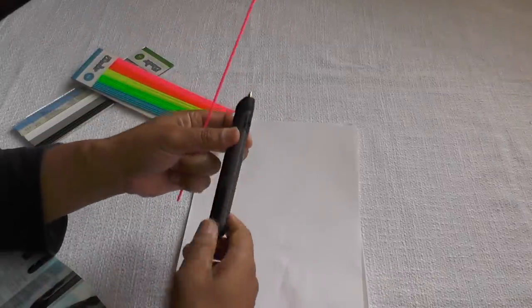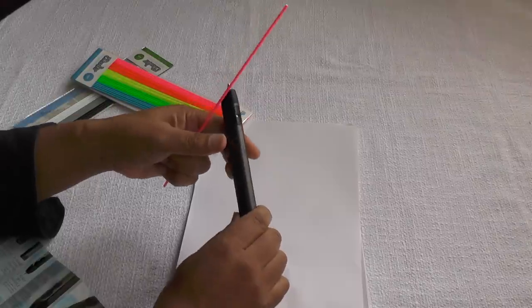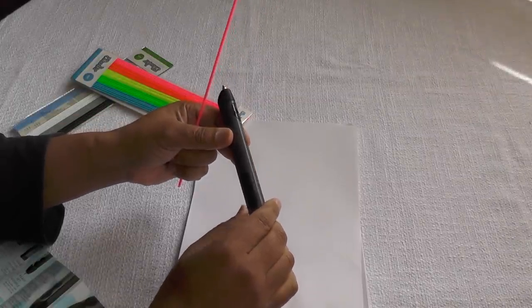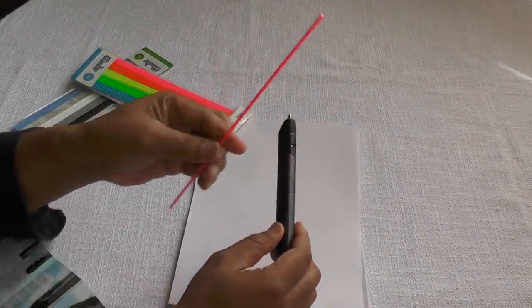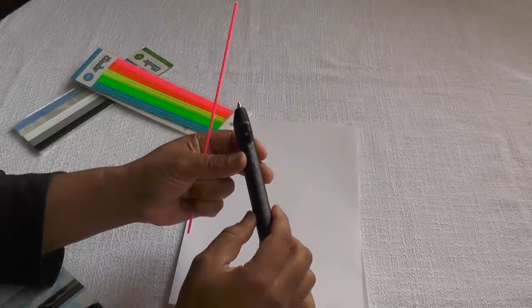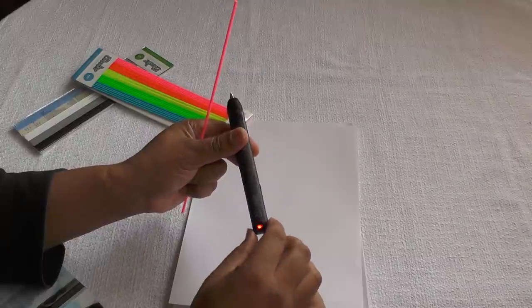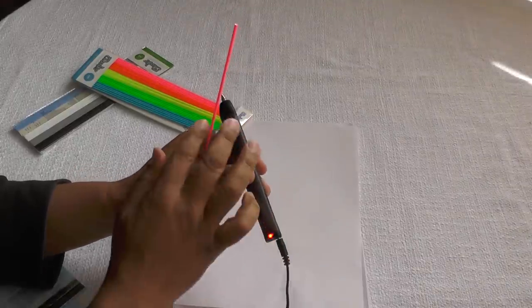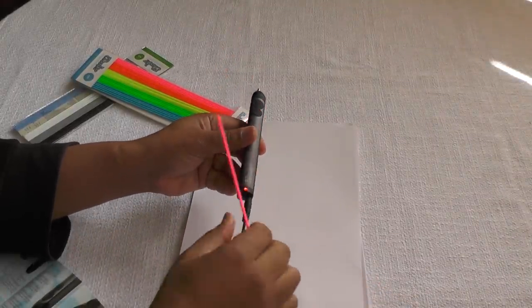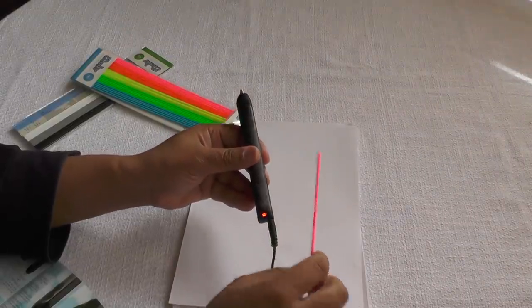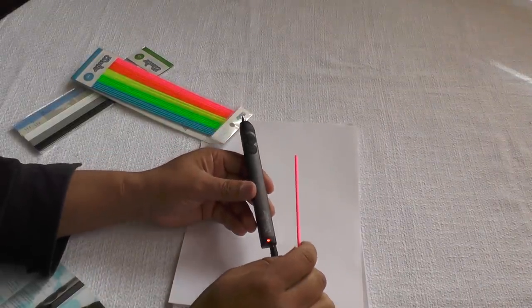So the first thing you have to do is select your temperature. So for the ABS it's actually hot, so you need the high setting. And what will happen is the light will go on to show you that's warming up, and then when it's warmed up it'll change to blue for the high setting.